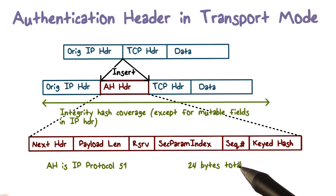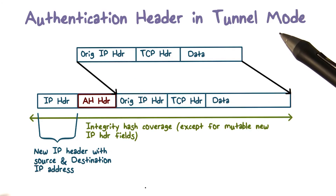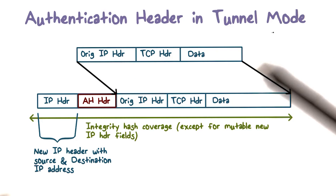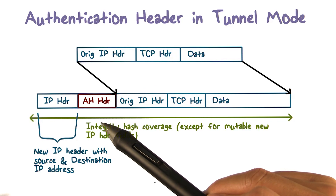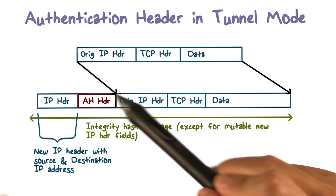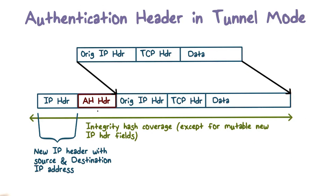We will discuss these shortly. If AH is used with tunnel mode, the AH header is inserted after the new IP header.